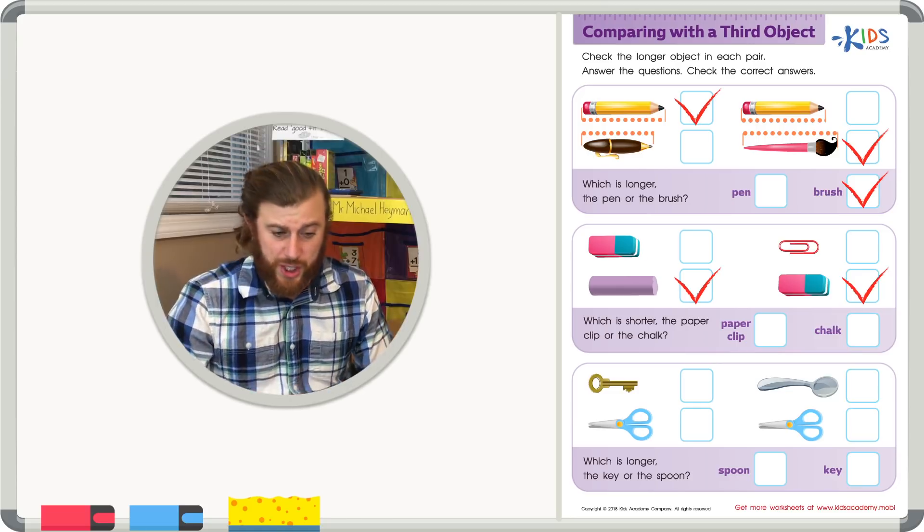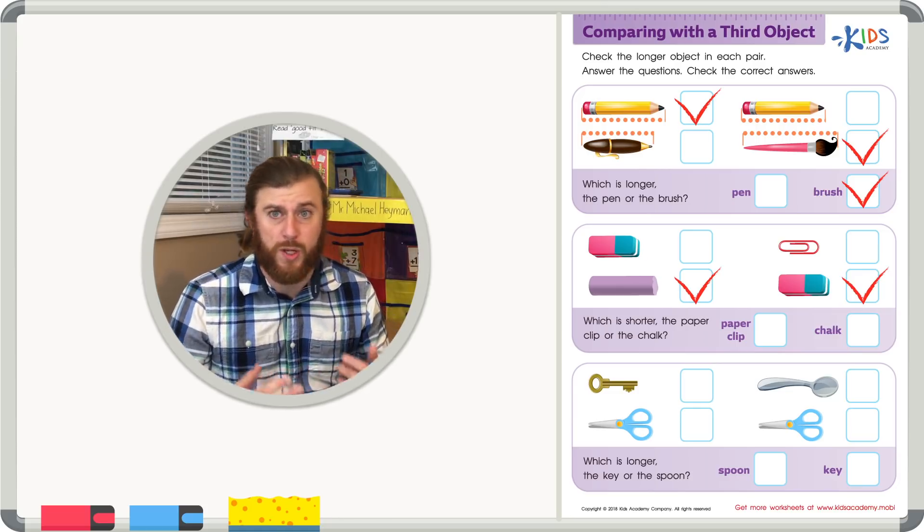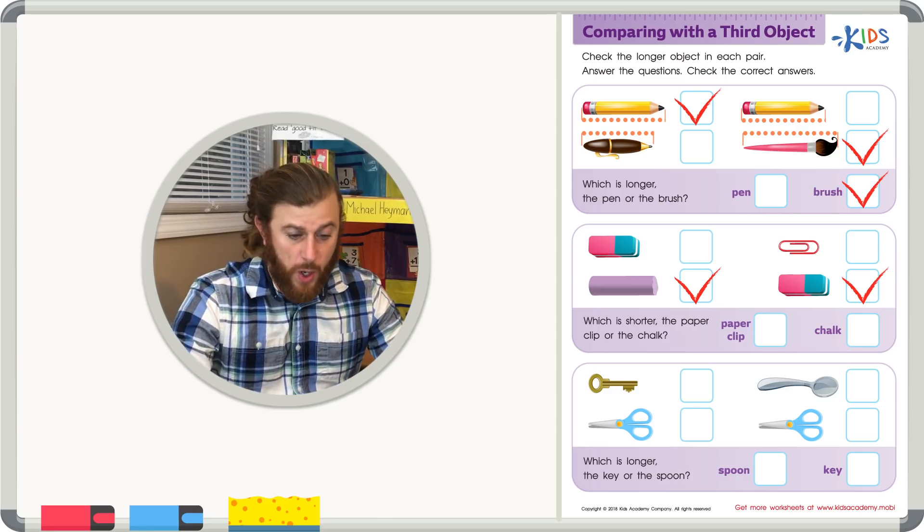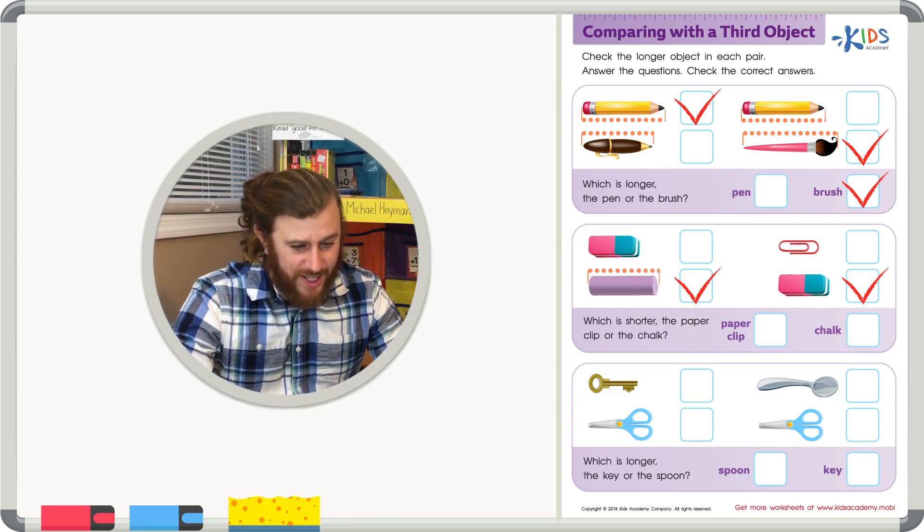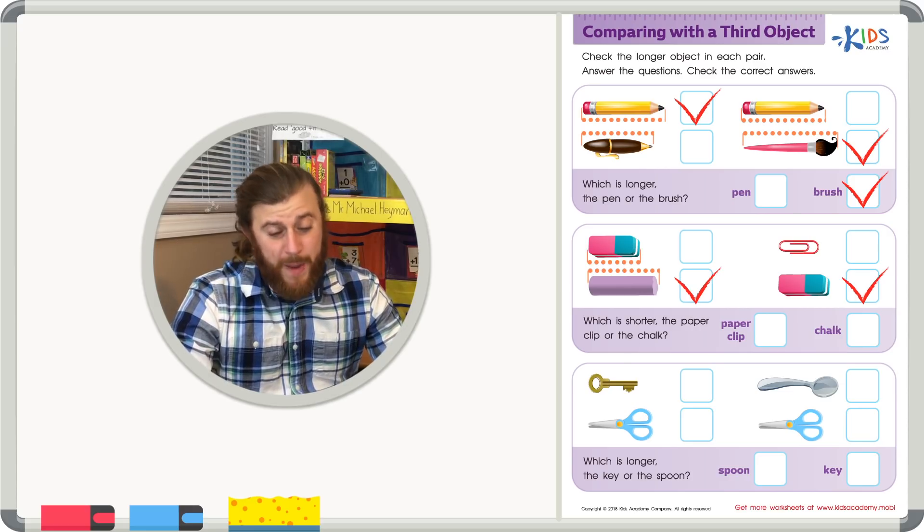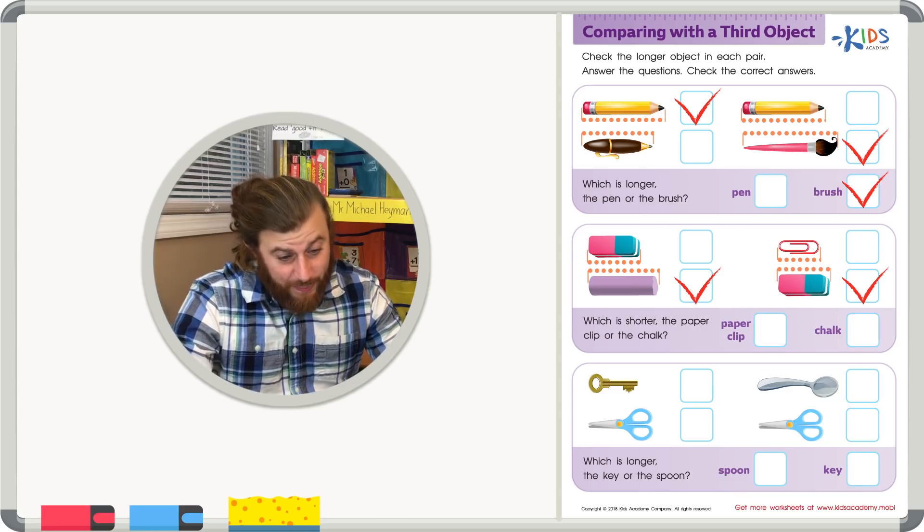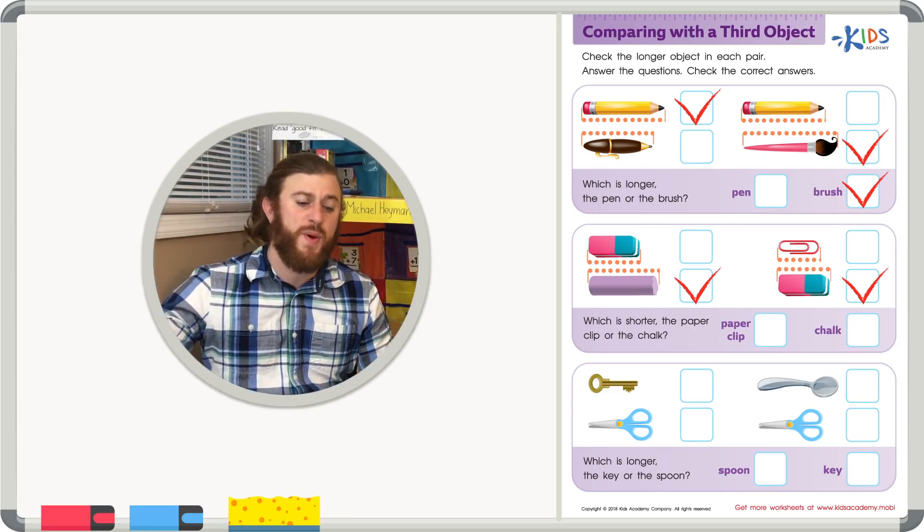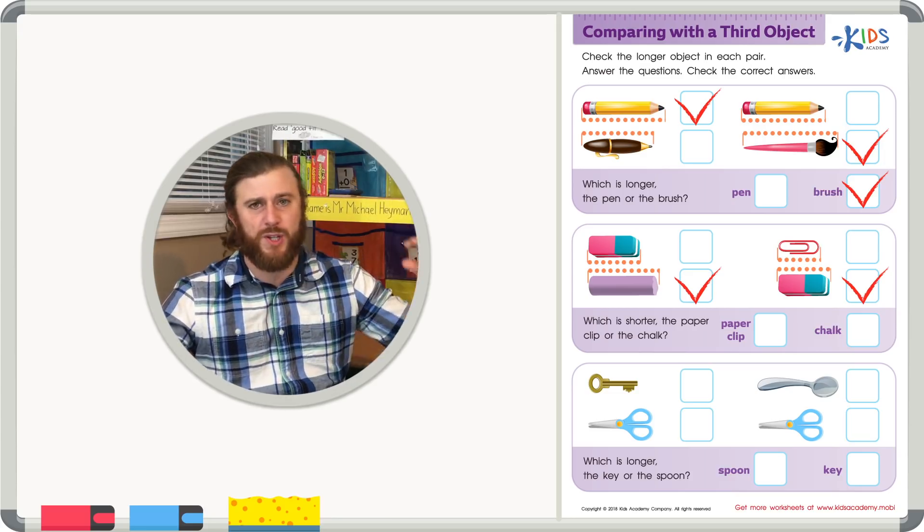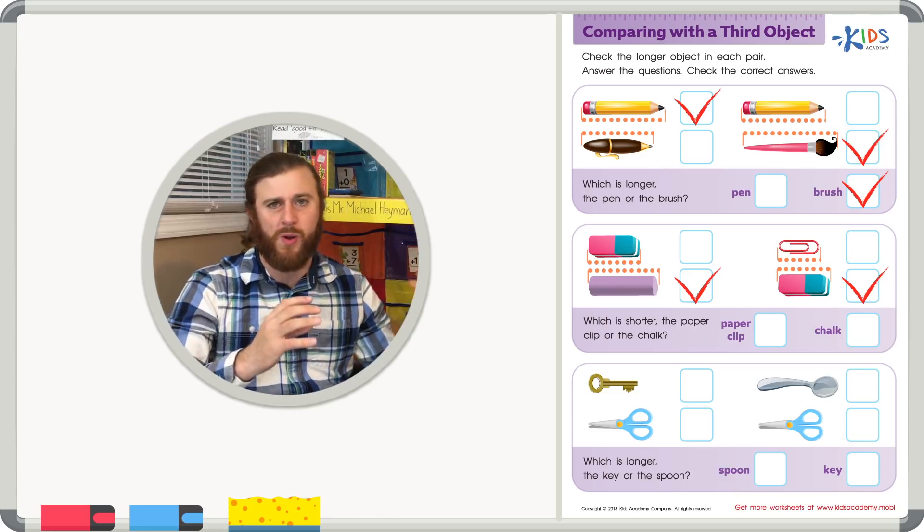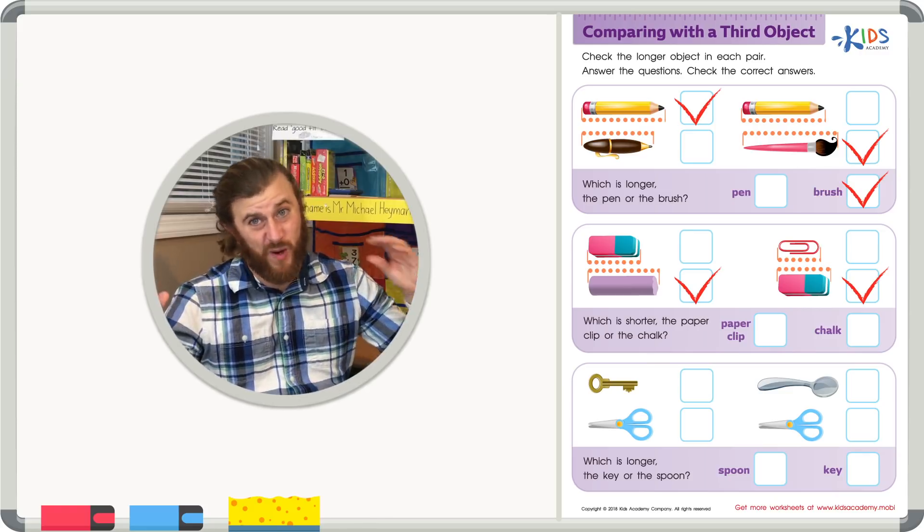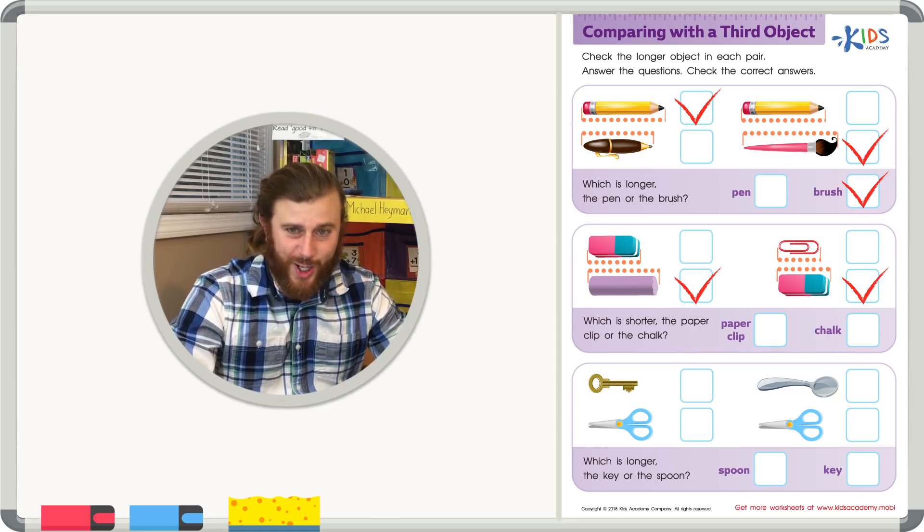Now the tricky question. Which is shorter? The paper clip or the chalk? Well again, let's use what we know about the pictures. We know the chalk is longer than the eraser, but we also know the paper clip is shorter than the eraser. So we know that the chalk is the biggest thing, because it's bigger than the eraser, and we know the paper clip is the shortest thing, because it's smaller than the eraser. Therefore, the chalk must be bigger than the paper clip. Let's go ahead and check the chalk.